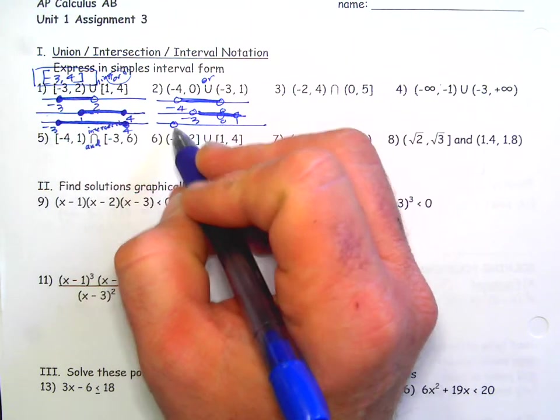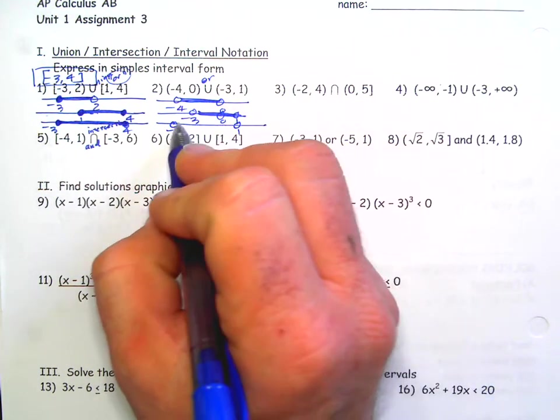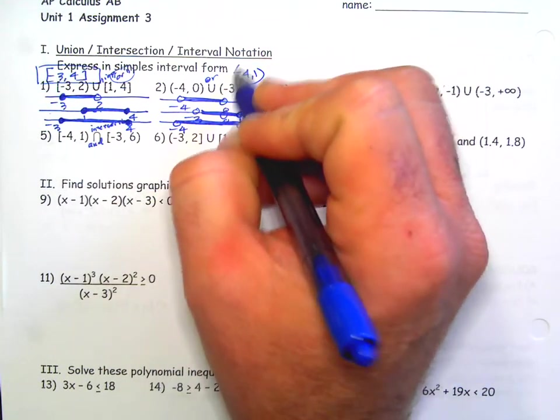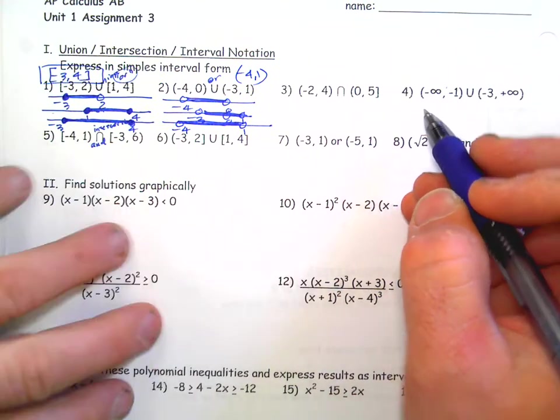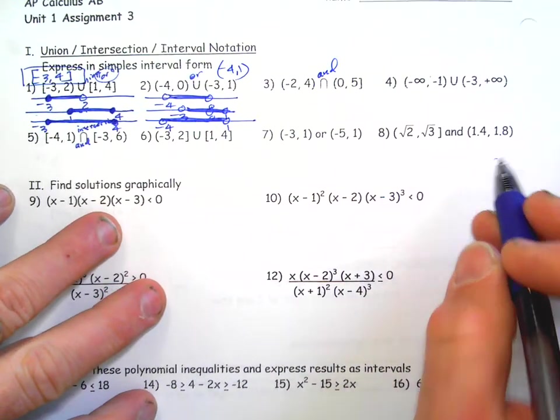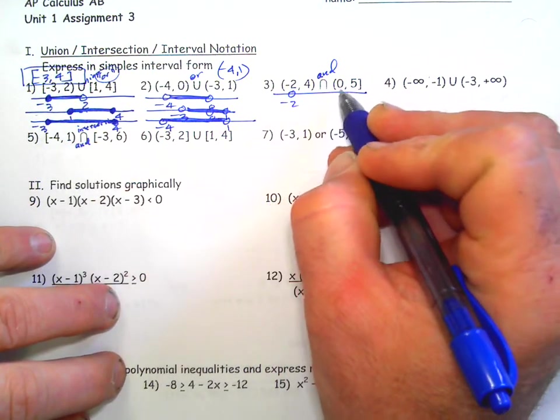Now, what are all the points that at least belong to one of these, if not both? Negative 4 doesn't belong to either of them. 1 doesn't belong to either of them. But every point in between is at least one of them. So that's negative 4 to 1, parentheses. Okay, next one. This is an intersection. This is the same as and, which means they both have to be true at the same time.